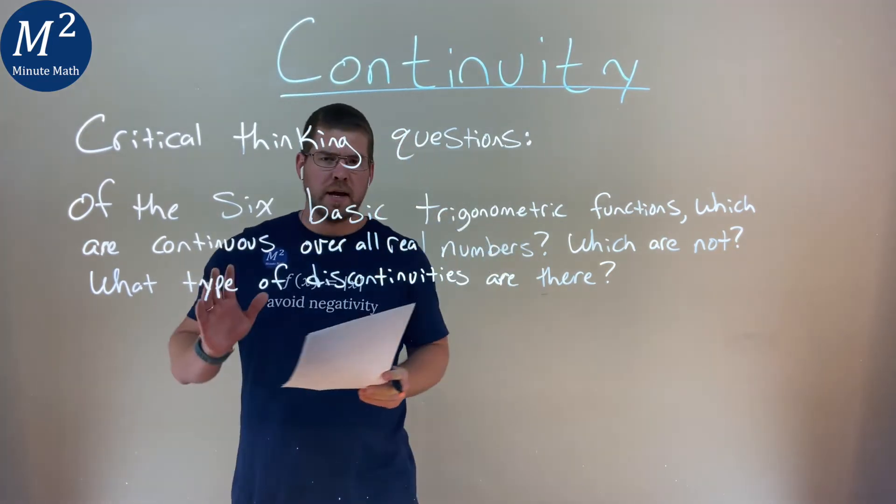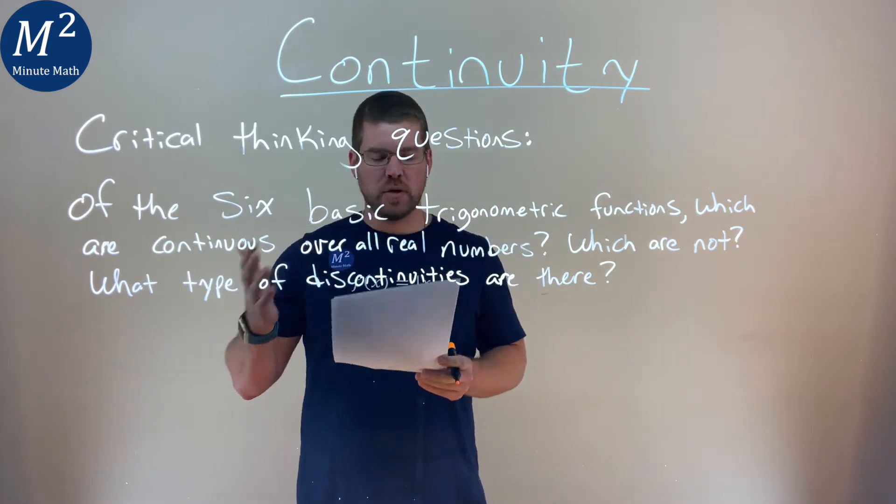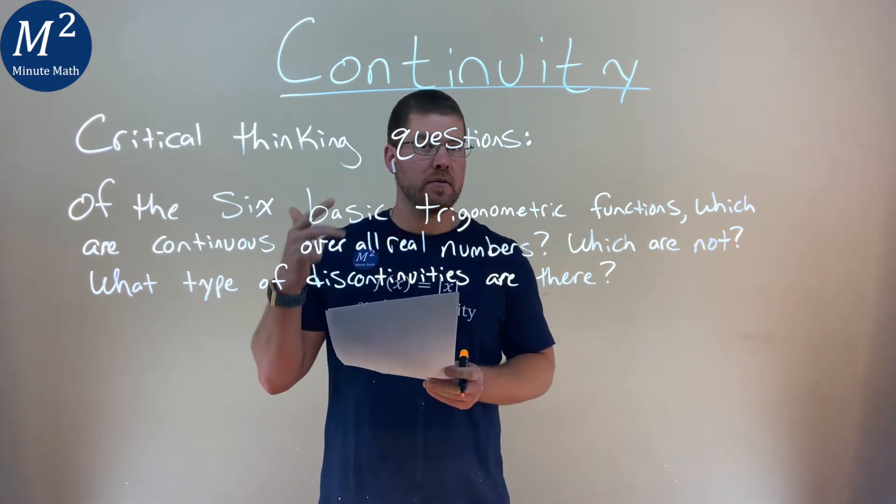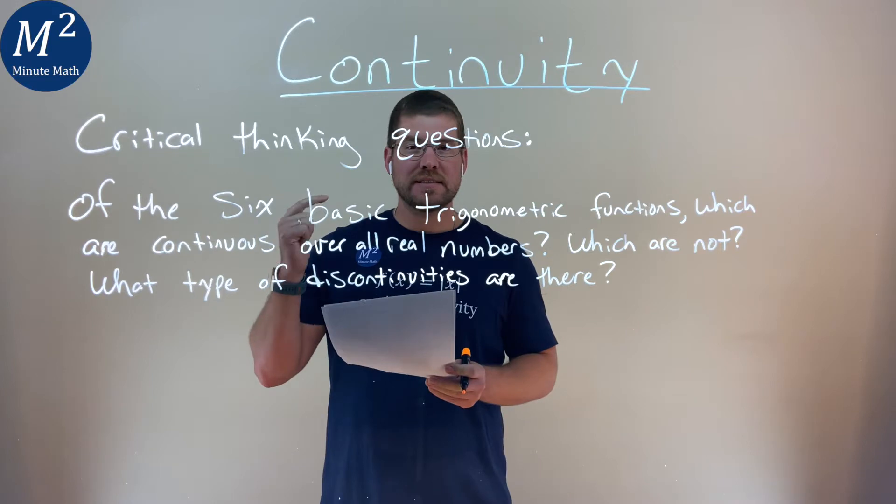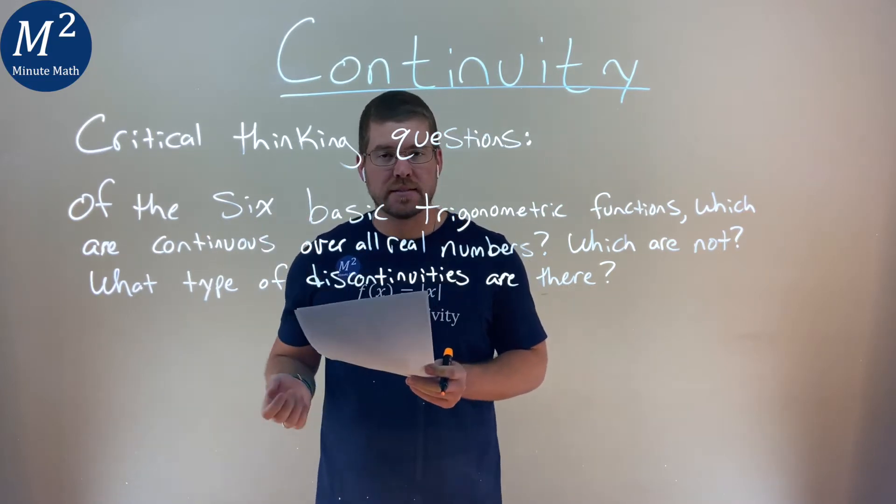So, the first thing I'm going to look at is the six basic trigonometric functions: sine, cosine, tangent, cosecant, secant, and cotangent. Those are the basic six there.